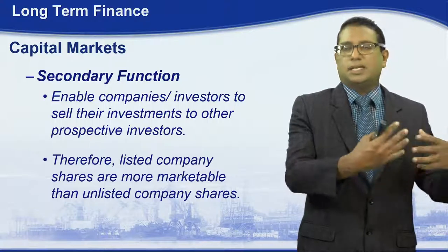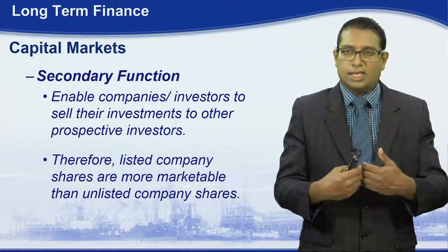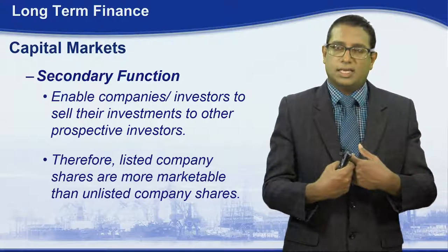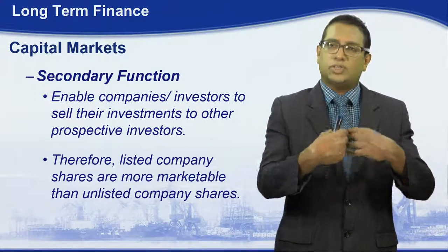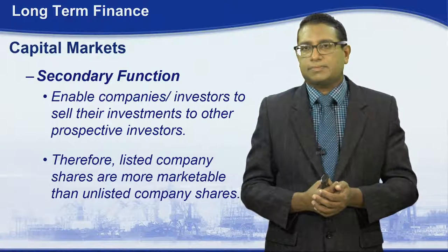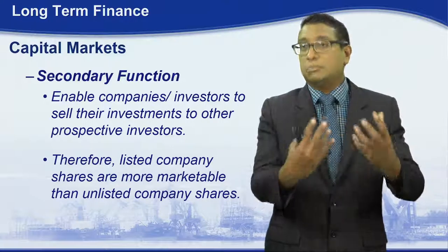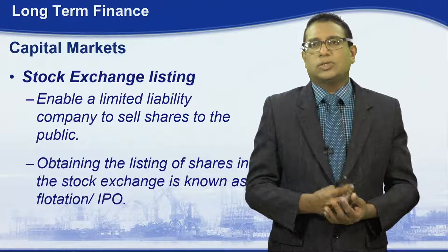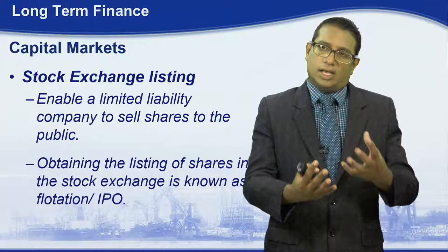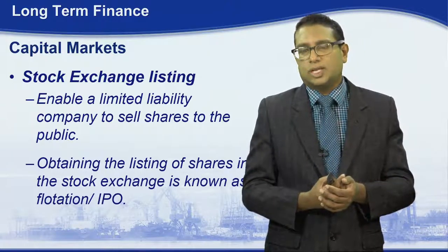The primary function is basically the listing and availability of equity shares or debt to investors. The secondary function is trading. For example, if you buy shares, because of this secondary function you will be able to sell those shares to other investors. The advantage of the secondary function is that shares of listed companies are more marketable than shares of unlisted companies. Now let us look at examples of capital markets and how stock exchanges handle these capital market issues.